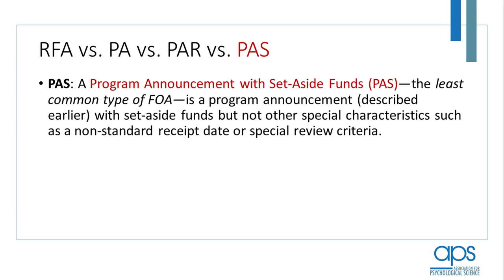A PAS, or a program announcement with set-aside funds, is the least common funding opportunity announcement within NIH. The only unique part of a PAS is that there are set-aside funds — there are no special receipt dates, no special referral guidelines, and no special review criteria. Typically, when an institute is setting aside funds for a particular topic area, they want to specify one or more of those other aspects, which pushes the program announcement to be a PAR rather than a PAS. That's why you very rarely see a PAS being issued these days.